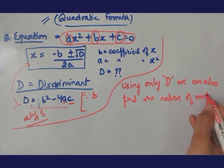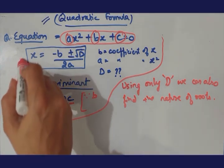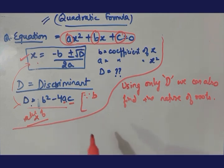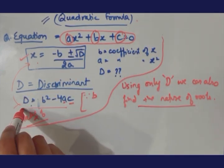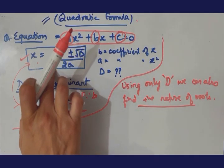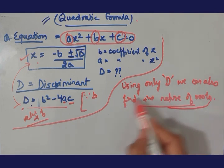Basically this, teen se bhi aapke do tariqe ki question aata hai. Ya to aata hai ki find the value of x using quadratic formula, ya aata hai find the nature of roots. If you use quadratic formula you have to find out the x and write it. And if you have to find the nature of roots, you have to use only D.